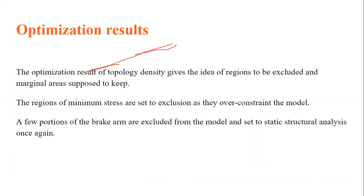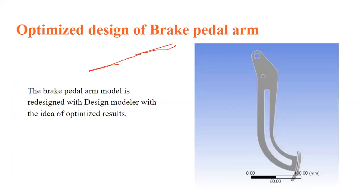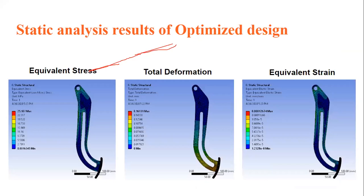Minimum stress regions are excluded as they over-constrain the model. The optimized design is then subjected to a second linear static structural analysis to verify whether it meets our required conditions. I took the original geometry and used the geometry editor to remove the minimally stressed regions, creating the optimized design. This optimized design was then used to perform the linear static structural analysis again.